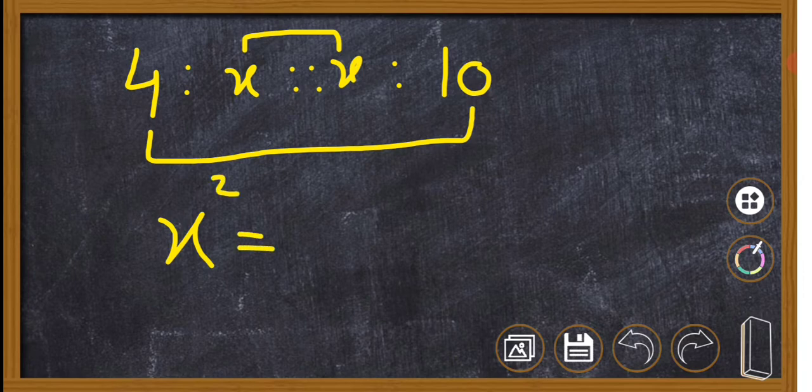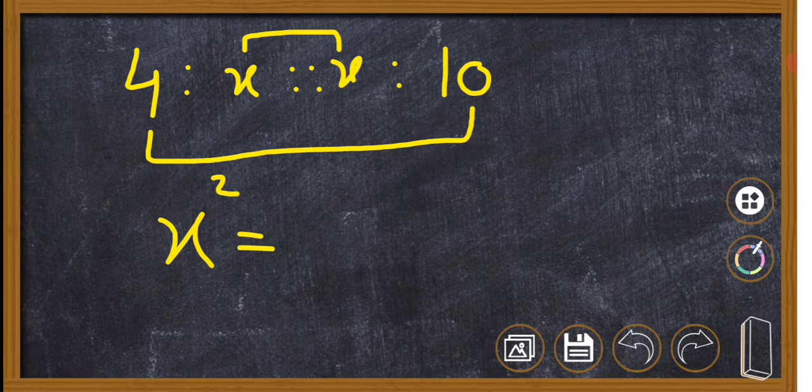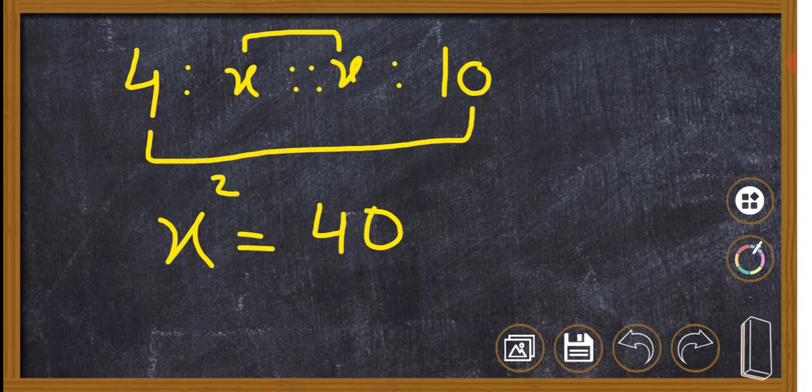When we take the square root, it's equal to the proportion a, b, c.